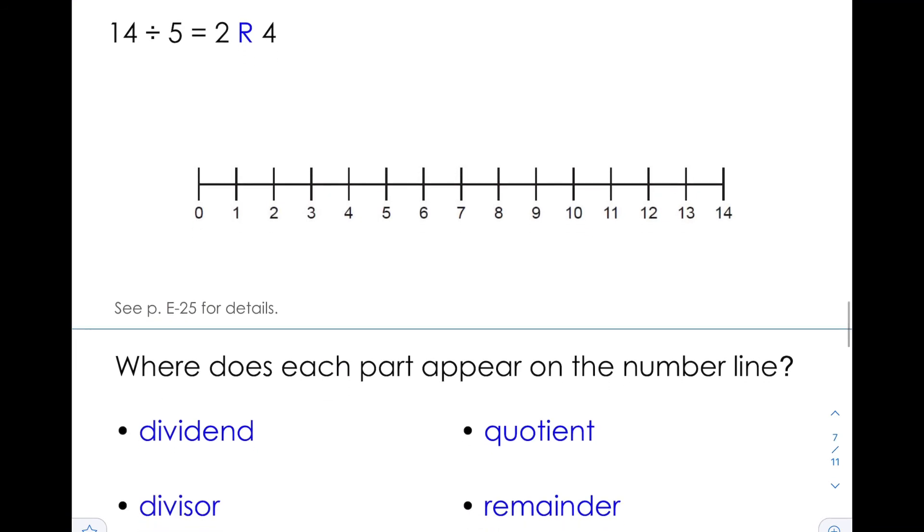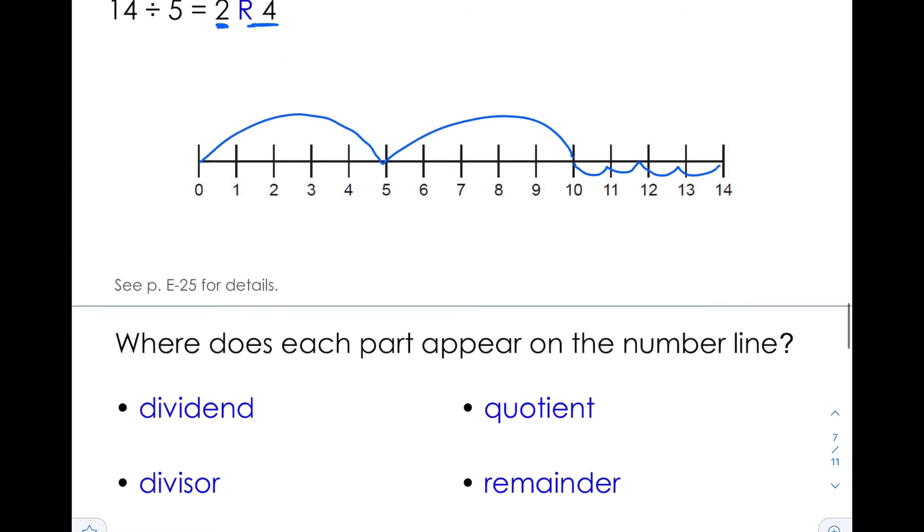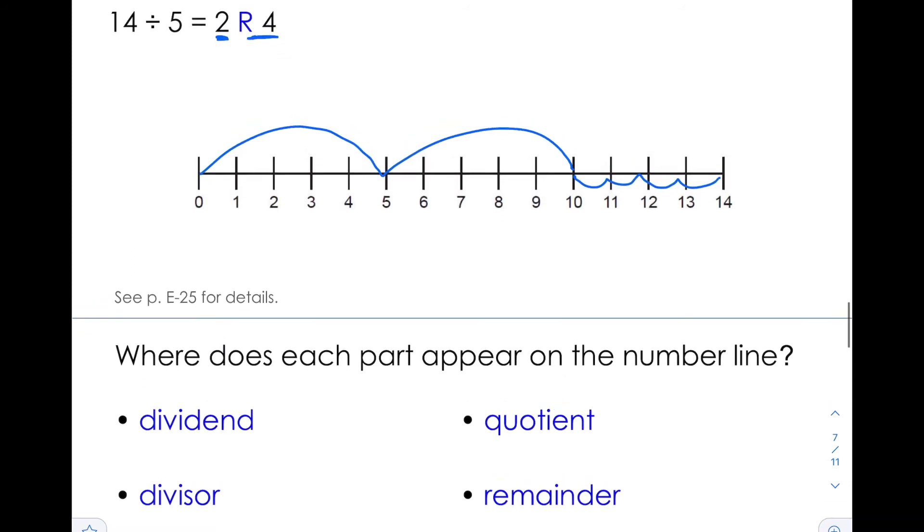If we look at an example here, 14 divided by 5, 5 is the divisor, 14 is the dividend. We're skip counting by 5s: 1, 2, and I can't go anymore. So there's my answer of 2, that is the quotient. And then I have to add 1, 2, 3, 4 more, and that is my remainder. Where does each part appear? The dividend is 14, the divisor is 5, the quotient is 2, that's the answer, and the remainder is 4.